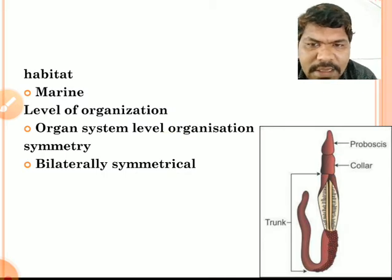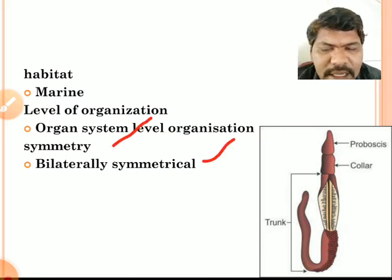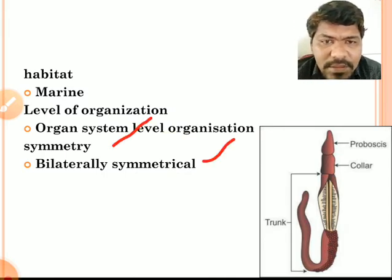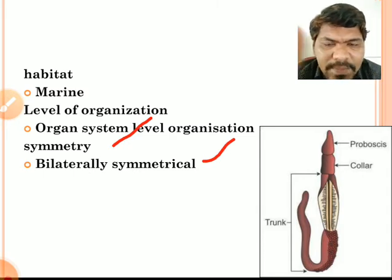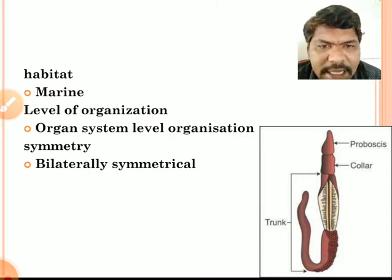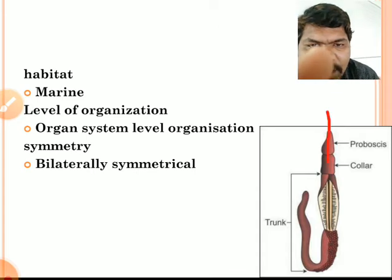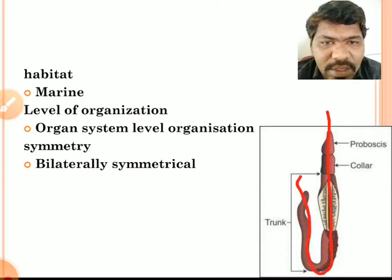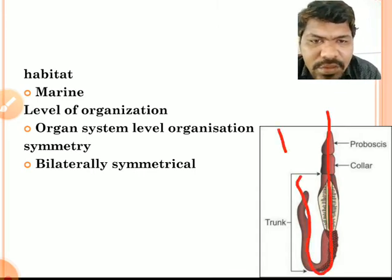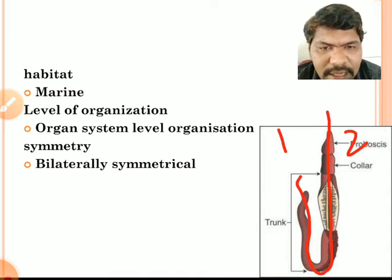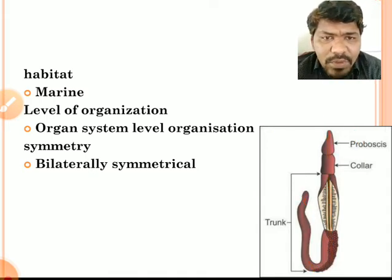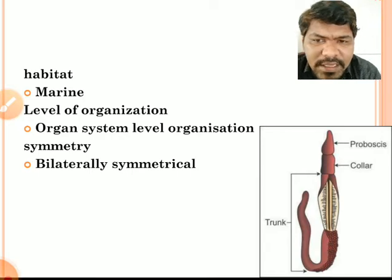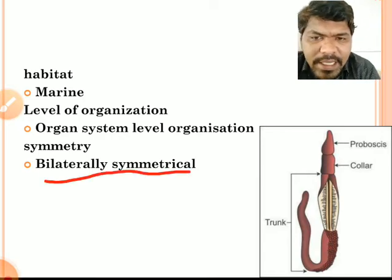Then symmetry. The symmetry of hemichordates is bilateral symmetry. Bilateral symmetry means only one plane — the plane which passes through the central axis — will divide the animal into two equal halves. Hence, hemichordates exhibit bilateral symmetry.